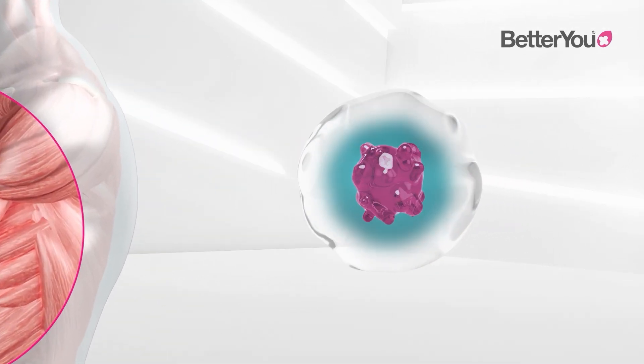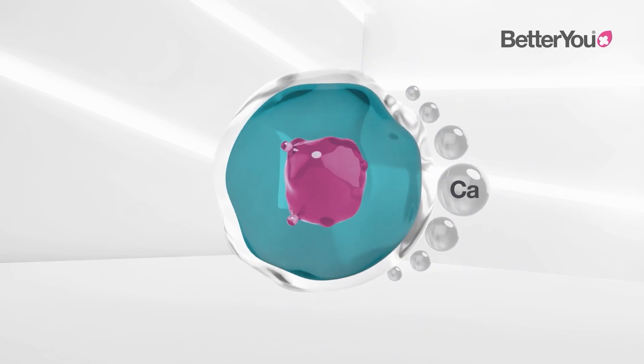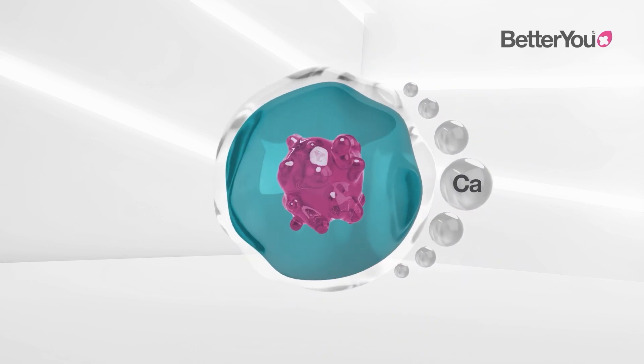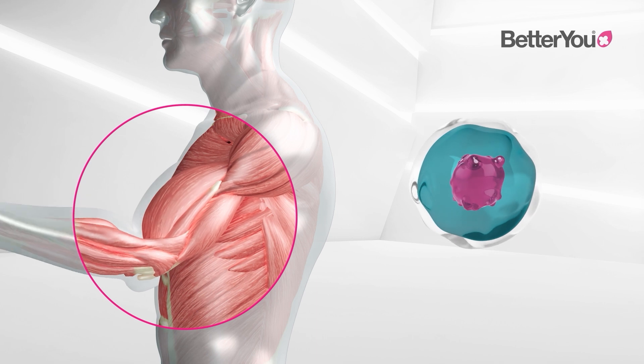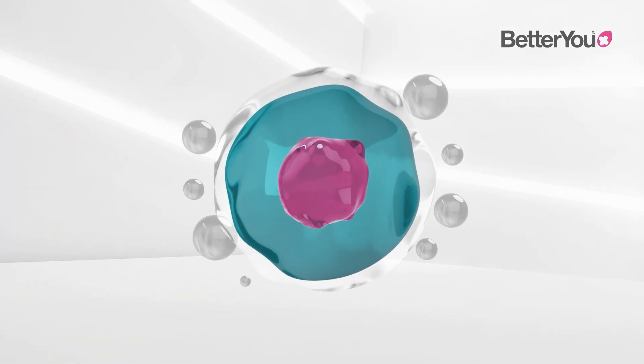It is then magnesium's responsibility to push the calcium out of the cell, allowing it to rest and repair. The muscle, for example, will now relax. Every cell in our body relies on magnesium to perform its unique and essential function.